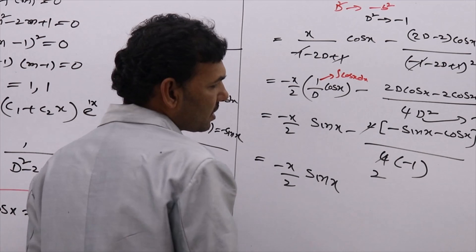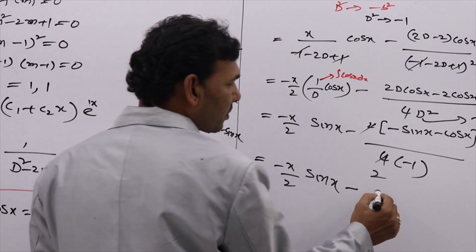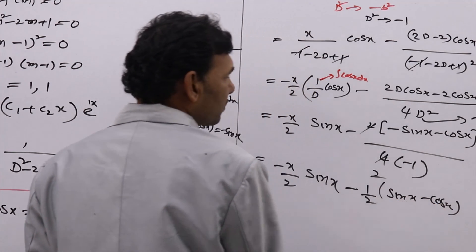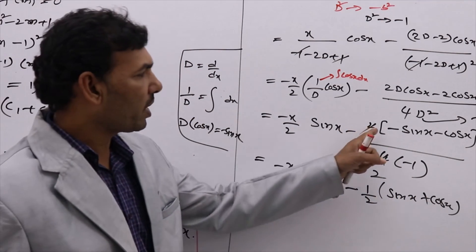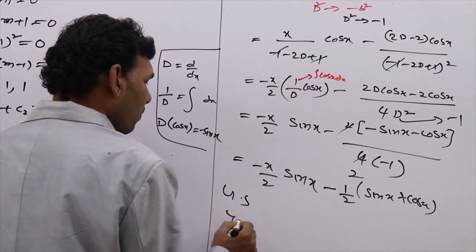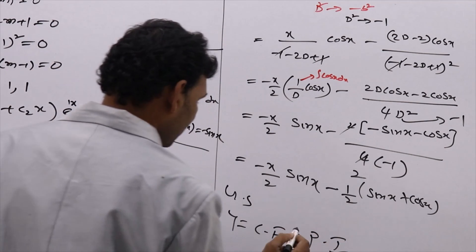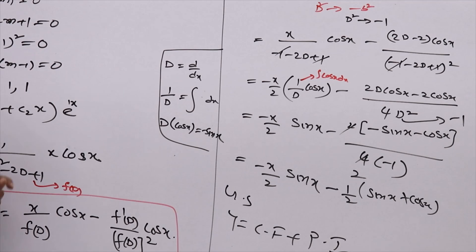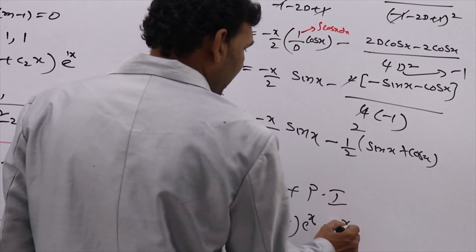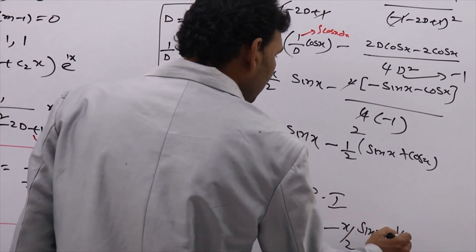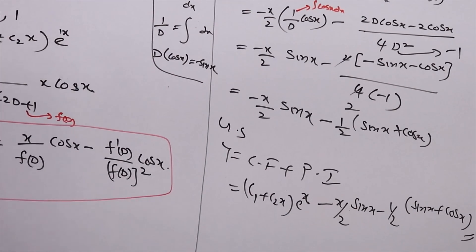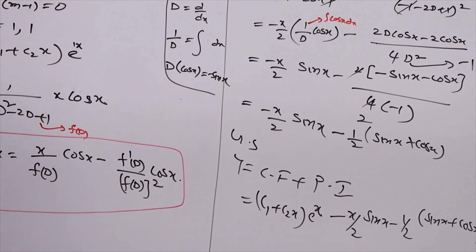Taking the signs carefully, the general solution is y = CF + PI. The complementary function is (c₁ + c₂x)·e^x. Adding the particular integral: y = (c₁ + c₂x)·e^x − x/2·sin(x) − 1/2·sin(x) + 1/2·cos(x). Are you clear? Any doubts you may express. It is very simple — just write the formula and substitute.